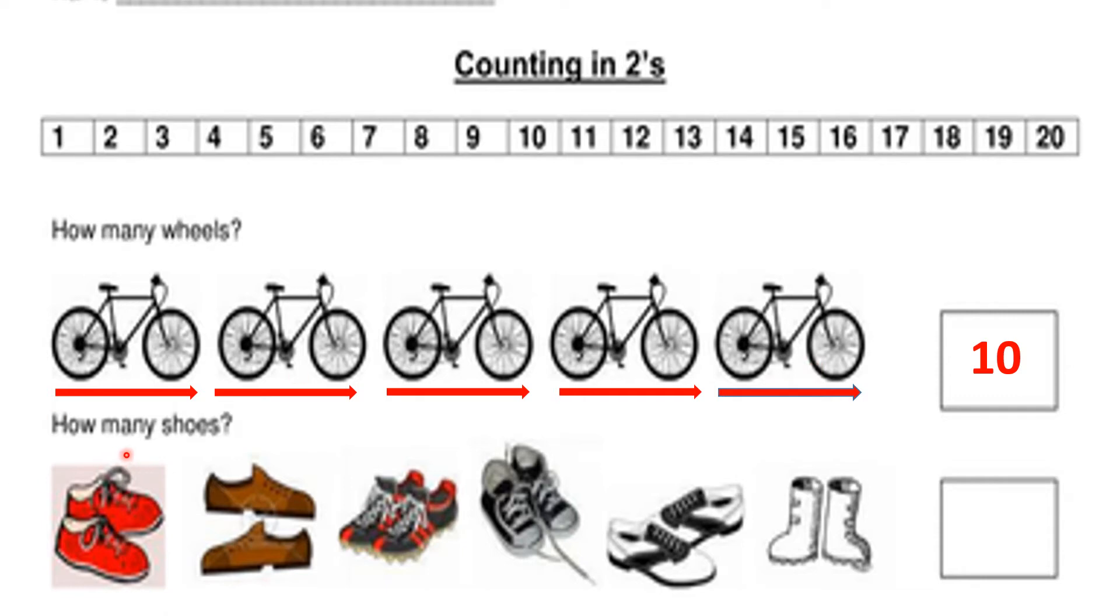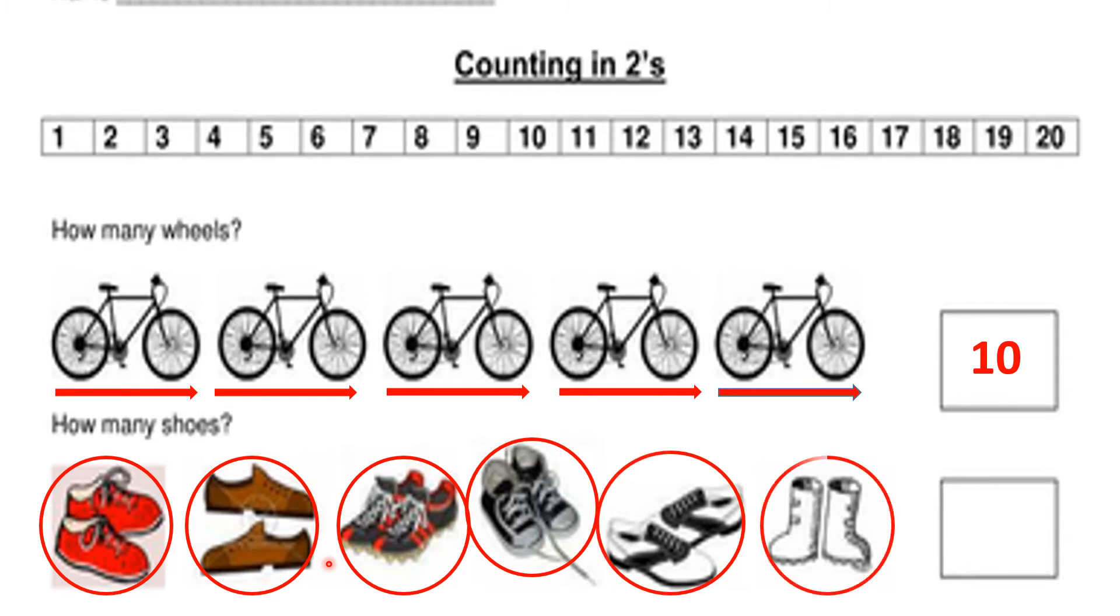Next question. How many shoes are there? First, we will make a pair of 2 shoes. Count first 2. Now, next 2 count. After 2, how many shoes you have now? 4. After 4, count 2 more. Yes, 6. After 6, 8. After 8, 10. After 10, yes, 12. So, right answer 12 here. There are 12 shoes.